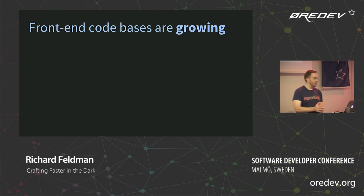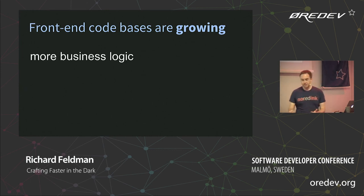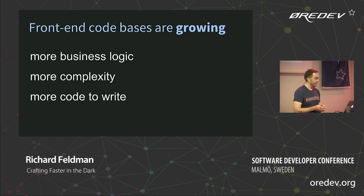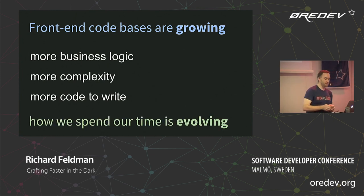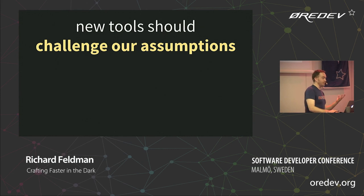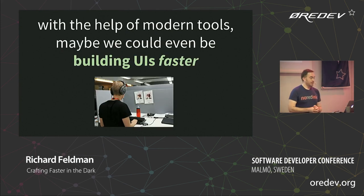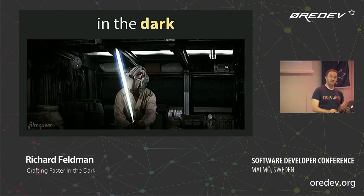To sum up: front-end code bases are growing. This is a trend that shows no sign of reversing — over time they've gotten more and more complex, in some cases to the point where with event sourcing they're the entirety of your logic. More business logic, less purely layout and visual stuff. We need more tools to manage this complexity. How we spend our time is evolving as front-end developers, making things get harder. New tools ought to challenge our assumptions about what it means to be a front-end developer, including what percentage of our time even should be spent in the browser. With the help of modern tools like Elm, it's entirely possible we could be building UIs faster in the dark. Thanks very much.